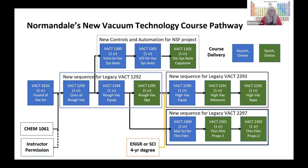After you take Vacuum Technology 1010, you move into VacTech 1293. Notice the black arrows will show you the course paths that are available. There are some choices — for instance, after 1293, you have two choices of the next course to take.